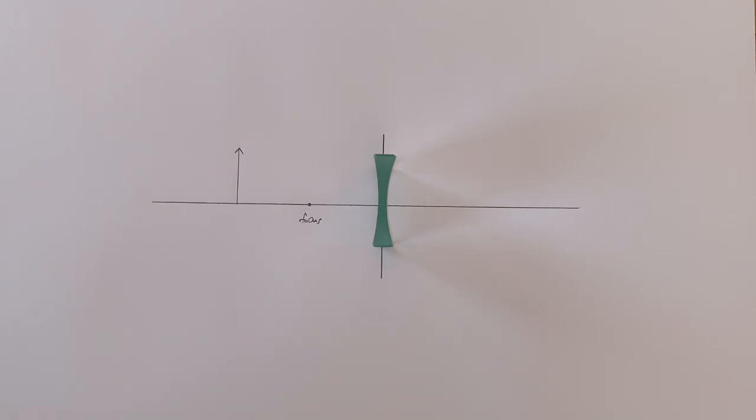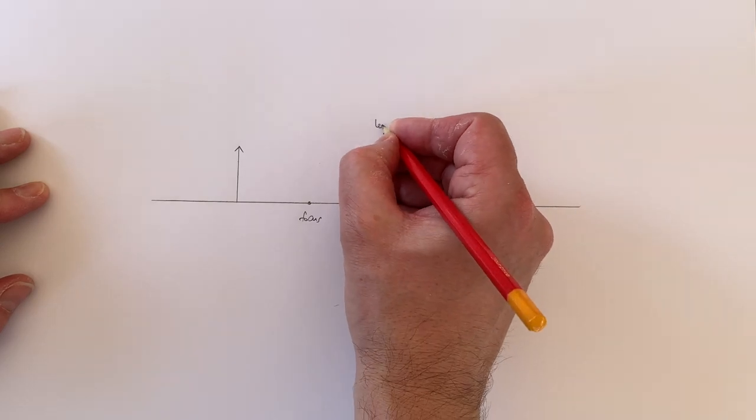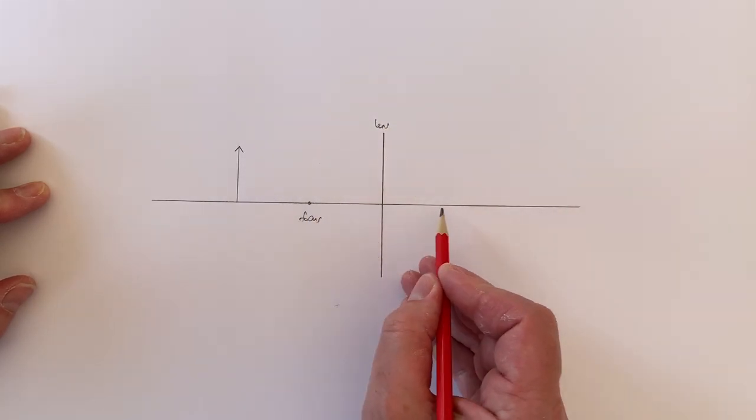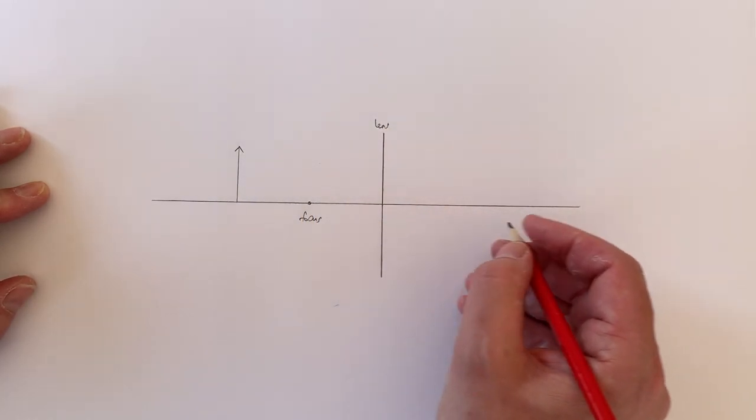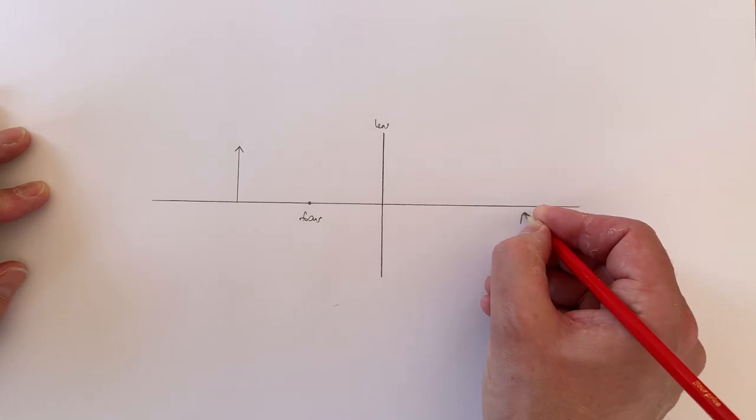So let's try and use these two properties to understand how a concave lens leads to the formation of an image. I'm going to remove the lens and represent the lens using this vertical line. The line that travels through the centre of the lens, crossing it perpendicular, is what we call the principal axis.